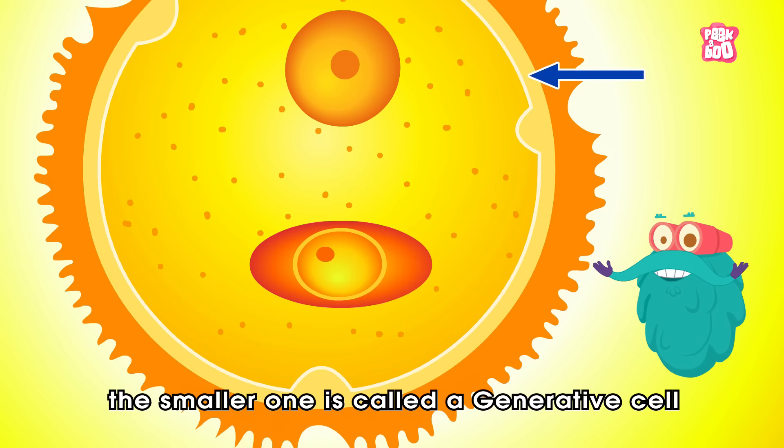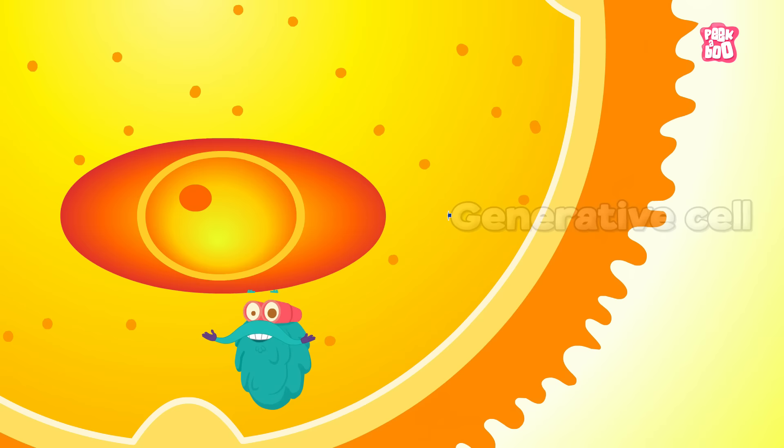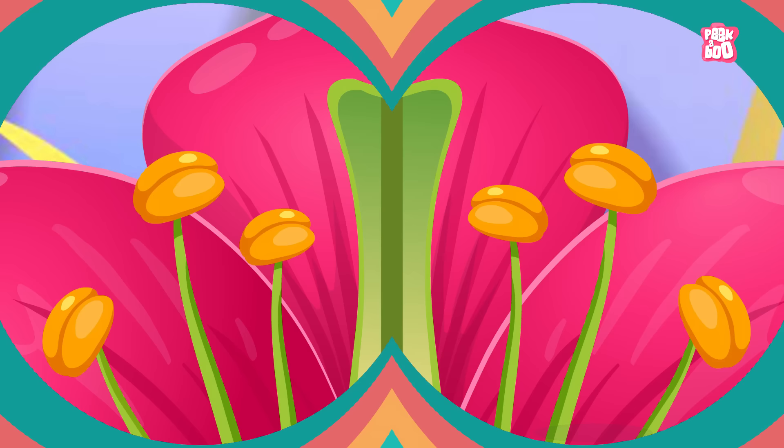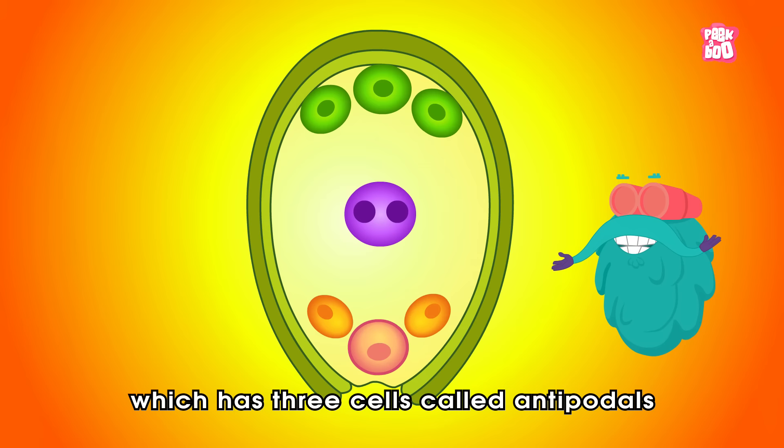The thin inner layer is called the intine, which contains two cells. The smaller one is called the generative cell, which divides to form two male gametes, and the larger one is called the tube cell, which gives rise to a pollen tube.